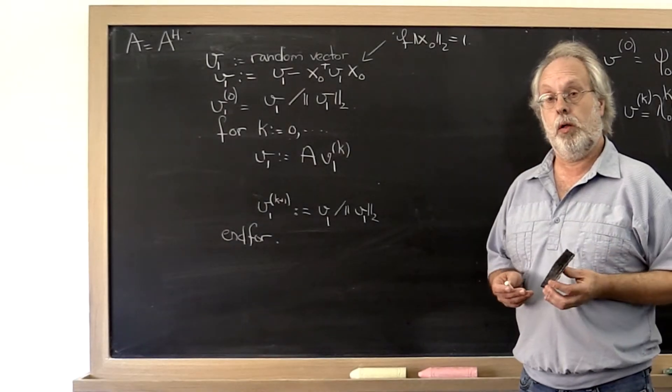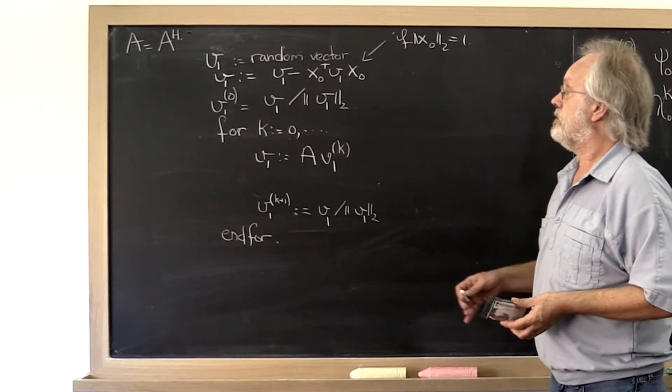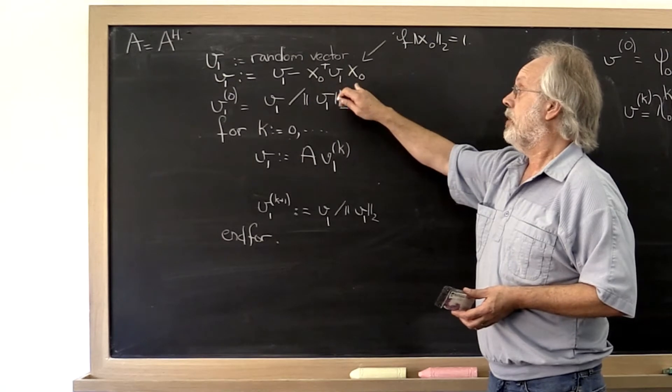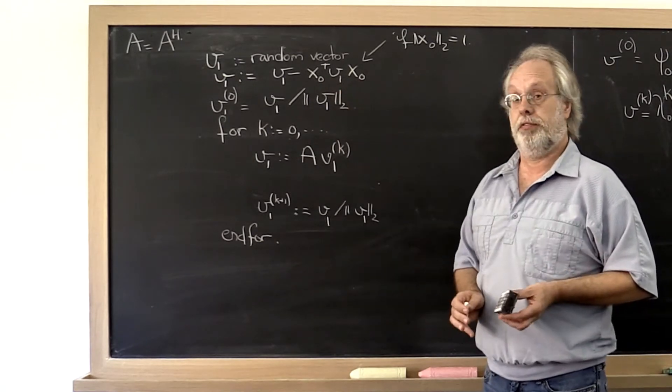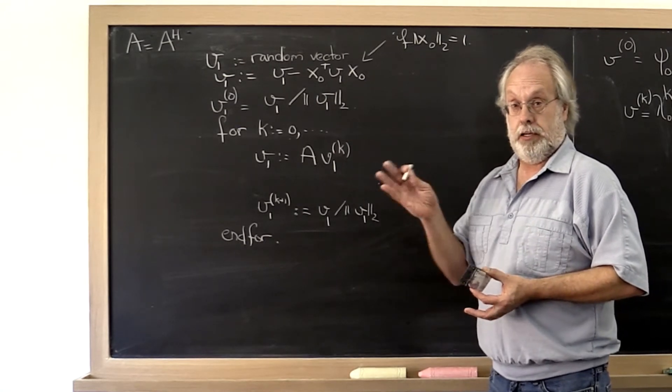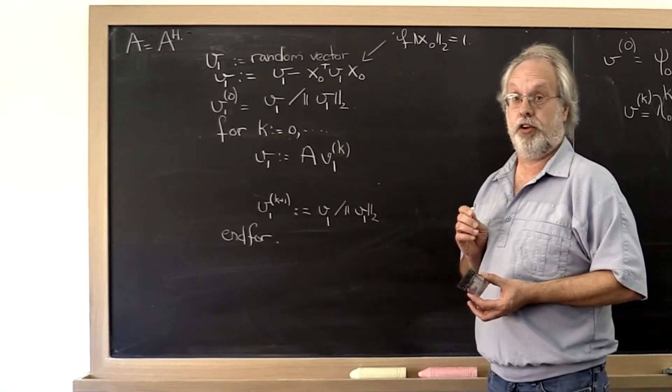Okay, so what can go wrong? Well, in practice when you subtract out the component in the direction of x0, you probably incur a little bit of error. So there might still be a tiny component in that direction left over.